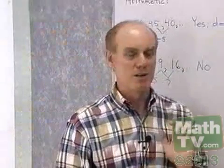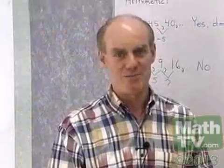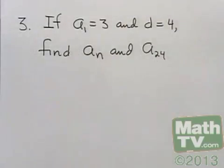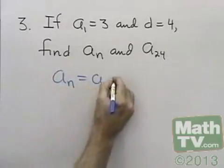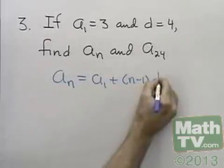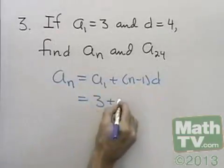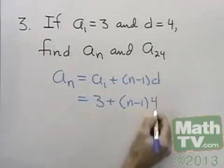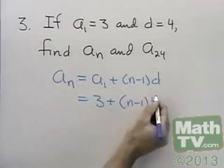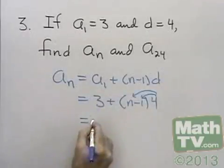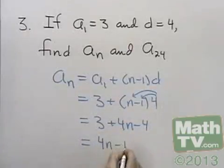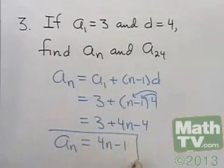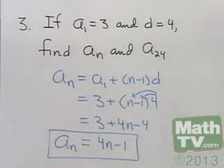Let's go to the next problem, where we're given certain information about a sequence and asked to find a couple of terms. Suppose that the first term, a1, is 3 and the common difference, d, is 4. Can we find the nth term and the 24th term? The nth term in an arithmetic progression is the first term plus n minus 1 times d. In this case, that will be 3 plus n minus 1 times 4. Multiplying out, I get 3 plus 4n minus 4, which simplifies to 4n minus 1. So there's the nth term: 4n minus 1.